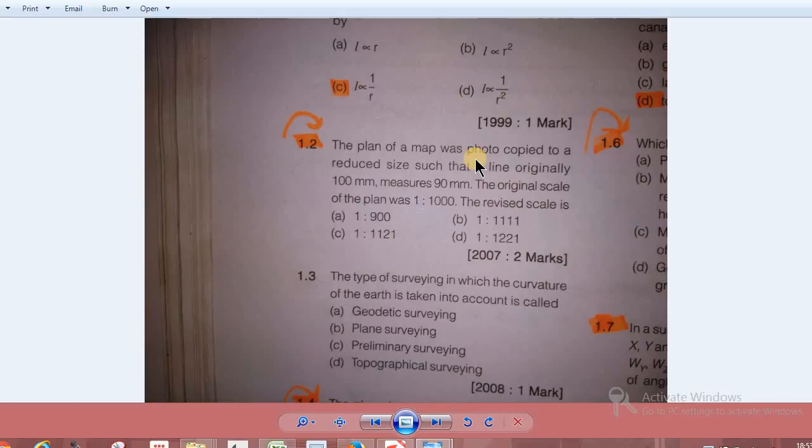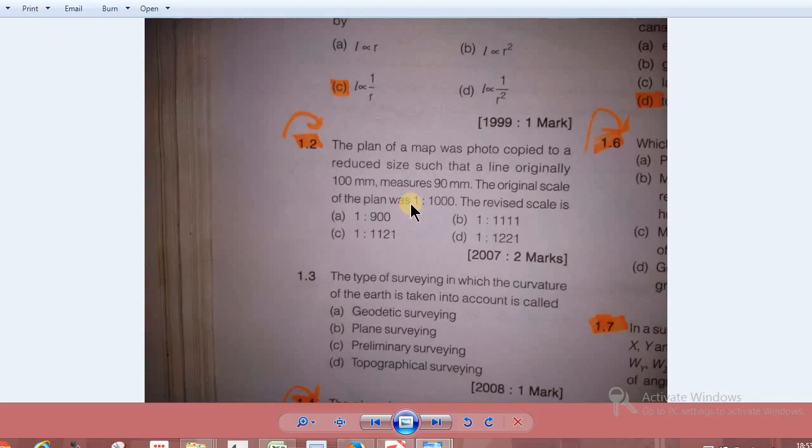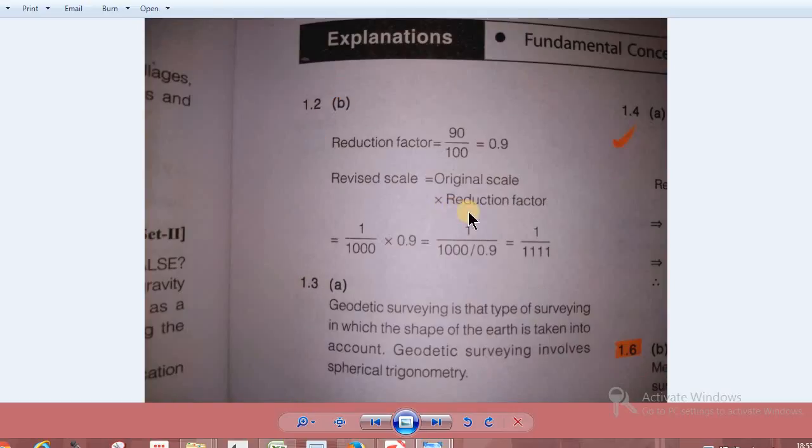A plan of the map was photocopied to reduce its size such that a line originally 100mm measures 90mm. The original scale of the plan was 1:1000. The revised scale equals the original scale times the reduction factor, so 1/1000 times 0.9, which is 1:1111.